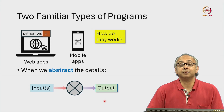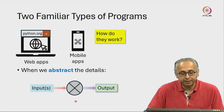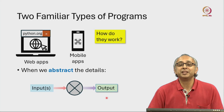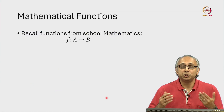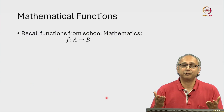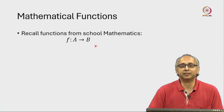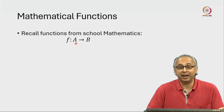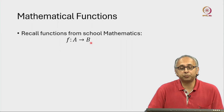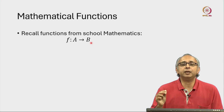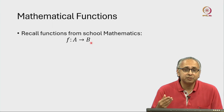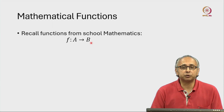Now if you ask any mathematician what something like this is called — where I feed something in, perform some calculation, and it produces an output — they will immediately say you are talking about a mathematical function. In school-level textbooks you would have seen notation like this: there is a mathematical function F which takes inputs from some set A and produces an output that belongs to some set B. There are two very important properties that a mathematical function must satisfy, so let's take a look at those properties.